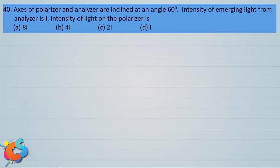The axes of polarizer and analyzer are inclined at an angle of 60 degrees. The intensity of emerging light from the analyzer is I. The intensity of light on the polarizer is: a) 8I, b) 4I, c) 2I, and d) I.